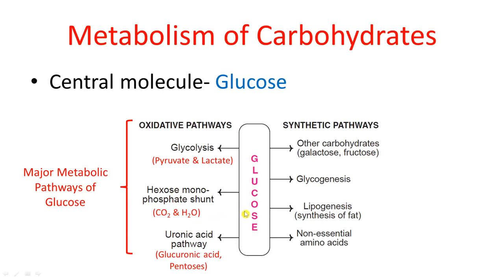Glucose can also undergo certain synthetic pathways. For example, it can be involved in the synthesis of galactose and fructose. Glucose also gets involved in synthesis of glycogen — the process known as glycogenesis — and in synthesis of fats, known as lipogenesis. Lastly, glucose also helps in the synthesis of non-essential amino acids.